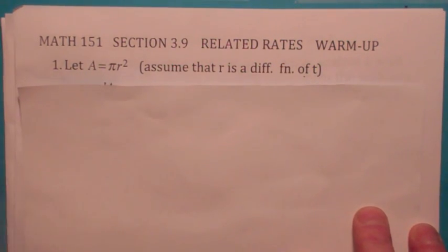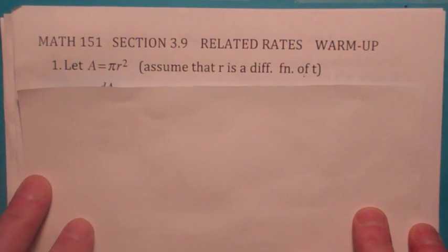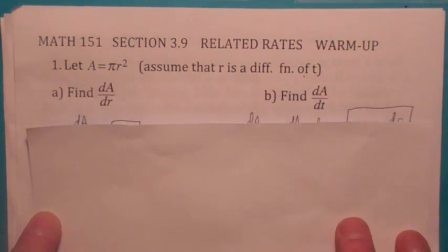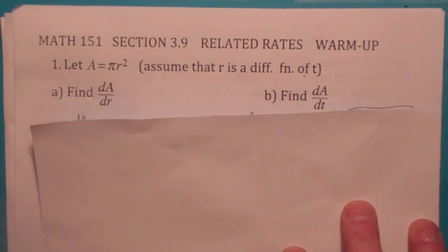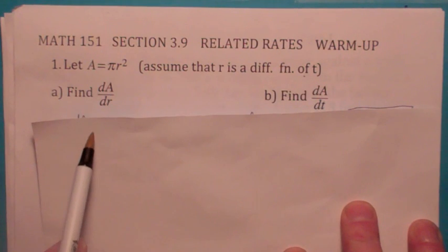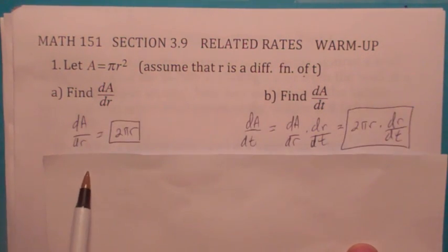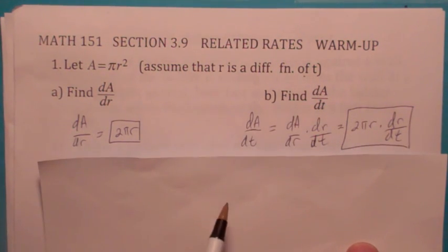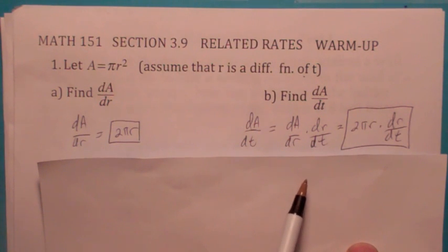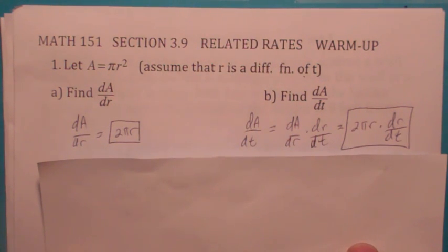A equals pi r squared, and we're assuming r is a differentiable function of t. Do you know the difference between dA/dr and dA/dt? dA/dr is just 2πr, because the derivative of what's inside is 1. But dA/dt, by the chain rule, when you take the derivative of what's inside, you get a dr/dt there.